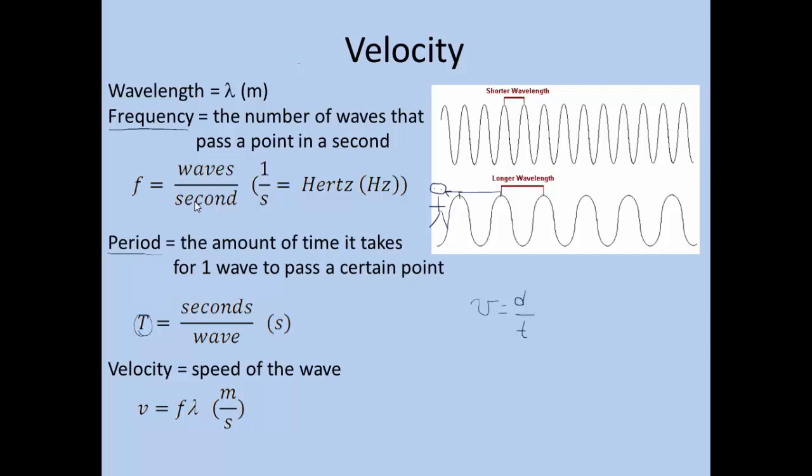How many waves pass a certain point in a second? So frequency is the waves per second, which has units of one over seconds, which is also called hertz. You should be able to see from looking at these that really period and frequency are the inverse of each other.